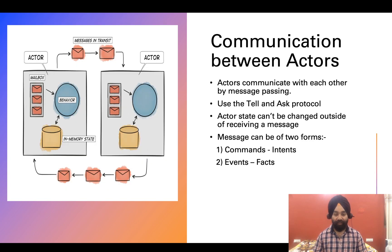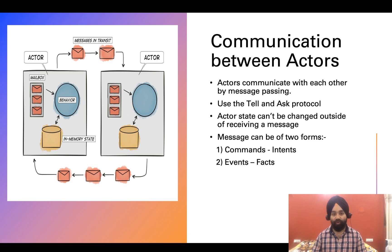Now, how do actors communicate with each other? Actors communicate by passing messages using the Tell and Ask protocols. Tell is like notifying another actor to do something and is non-blocking in nature, whereas Ask is like asking an actor to process a message and wait for a response. Importantly, it is not possible to modify the state of an actor outside of passing or receiving a message. Messages can be of two forms: commands or events. A command instructs an actor to modify its state based on something due to happen in the future, while an event asks an actor to modify its state based on something that has already happened.